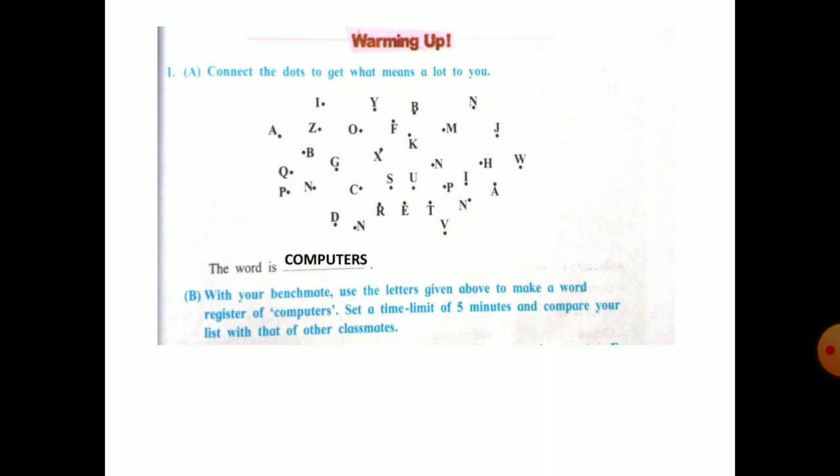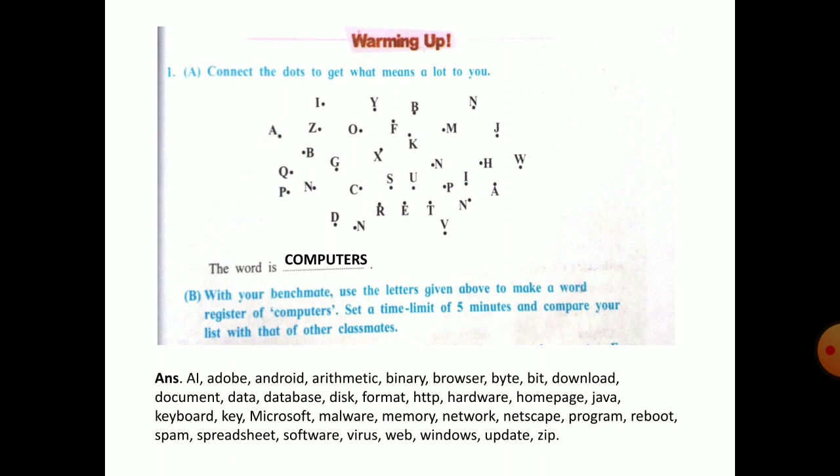Second question: with your benchmate, use the letters given above to make a word register of computers. Set a time limit of five minutes and compare your list with that of other classmates. From the computer word we have written here, we have a word register with 5 minutes time set. This is the word register: first one is artificial intelligence, AI stands for artificial intelligence, then add up, android, arithmetic, binary, browser, byte, bit, then download, document, data, database, desk, format, HTTP, hardware, home page, Java, keyboard, key, Microsoft, malware, memory, network, Netscape, program, reboot, spam, spreadsheet, software, virus, web, window, update, and zip. So this is the word register you can do with your friends as an activity.